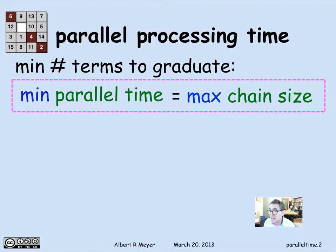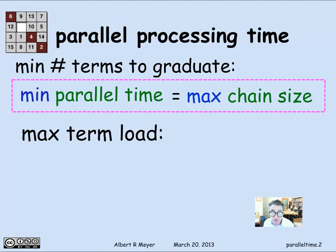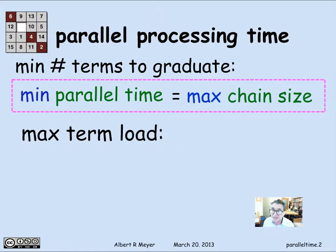We saw that example with the course prerequisites where we had five. And in general, this is the theorem: minimum parallel time is exactly equal to maximum chain size — the maximum size of chains in the graph that constrains the order in which tasks can be completed.